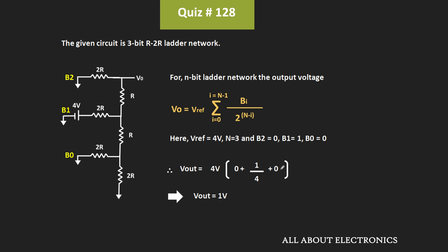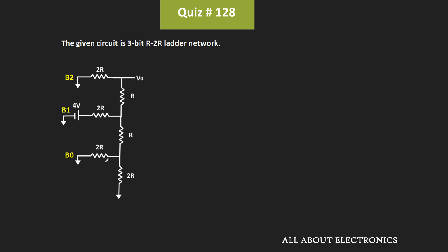So if you know the R2R ladder network and remember this expression, you can easily find the output voltage. But if you are not aware of this expression, you can also find the output voltage using circuit analysis. If you observe the circuit, these two resistors are connected in parallel — that means 2R parallel with 2R — which equals R. We can replace these two resistors by the equivalent resistance R.